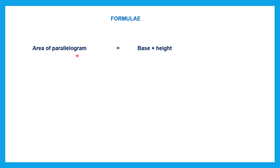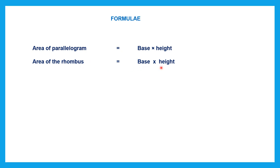First, the area for a parallelogram — if you have to find that, the formula is base into height. If you have to find the area for a rhombus, it is also base into height. If you have to find the area for a triangle, the general formula is half into base into height.